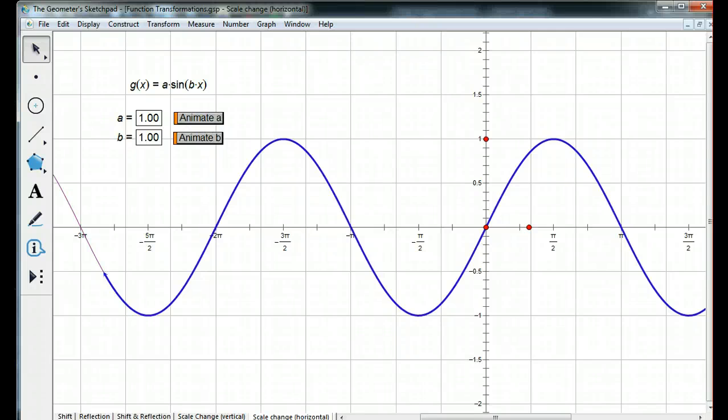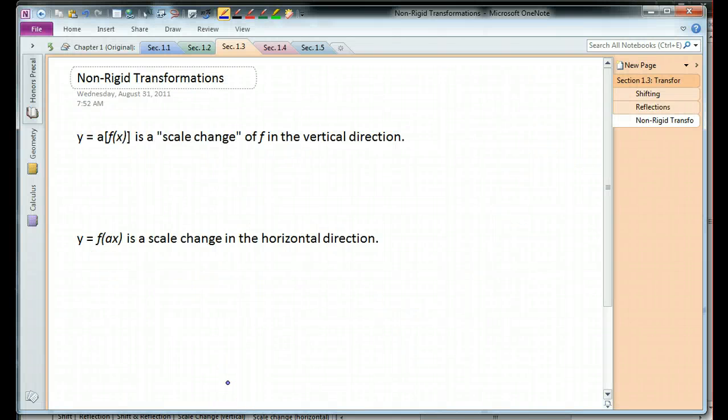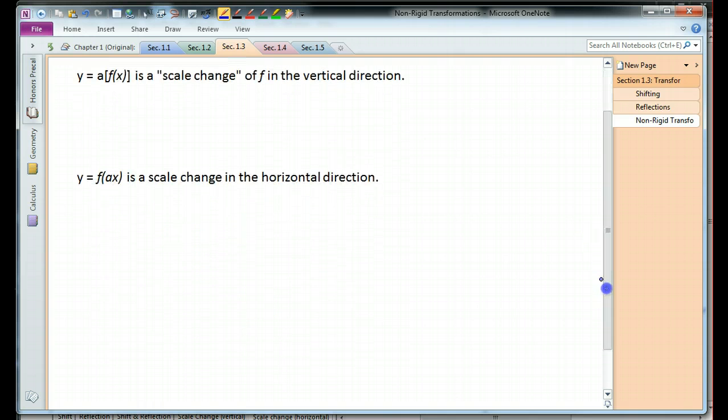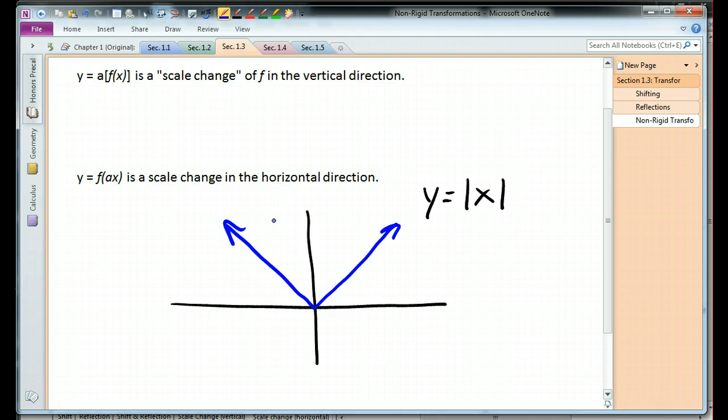Now, if you learn these transformations, then they're really handy because they work on any kind of function. So, if you know the parent function, and you have some transformations on it, it becomes a pretty simple matter of just graphing it. For example, let's take y equals the absolute value of x. So, we know that it looks like a v right there.